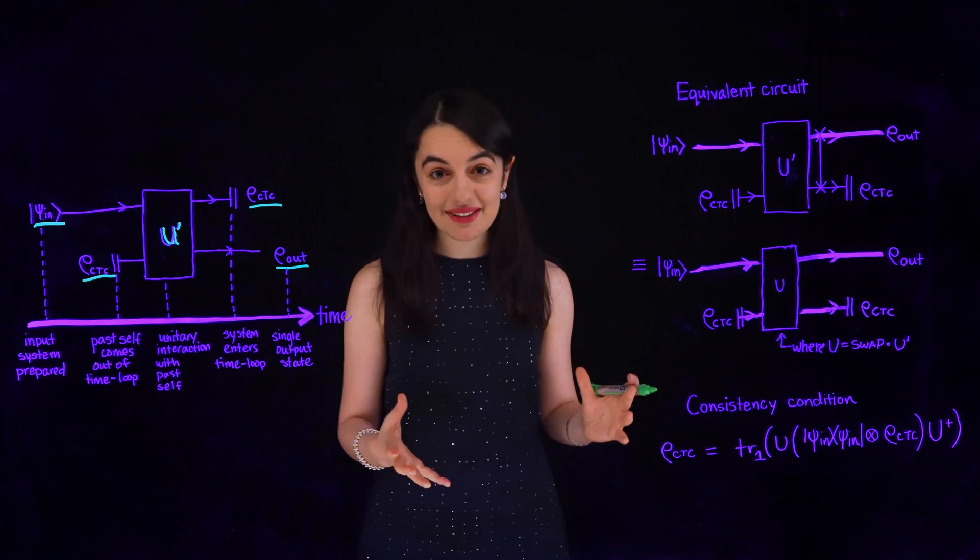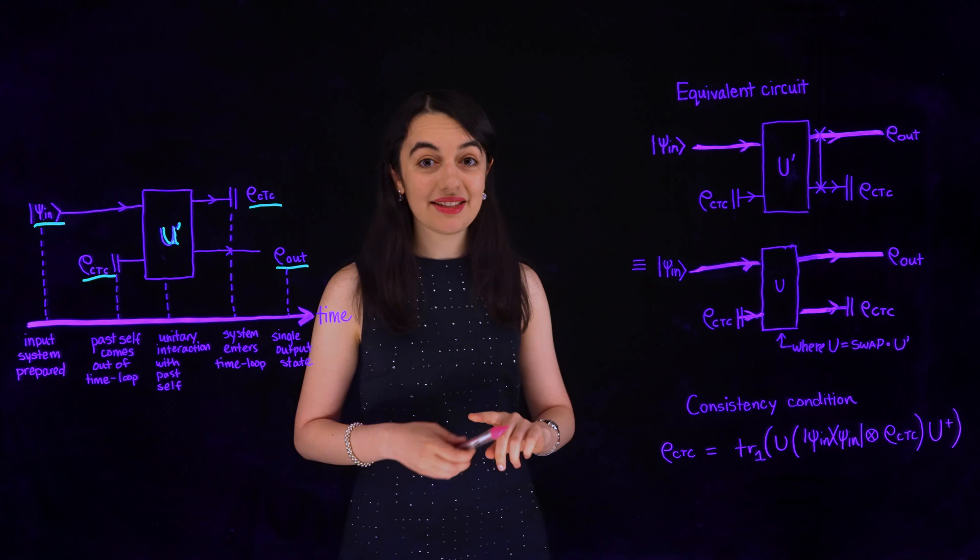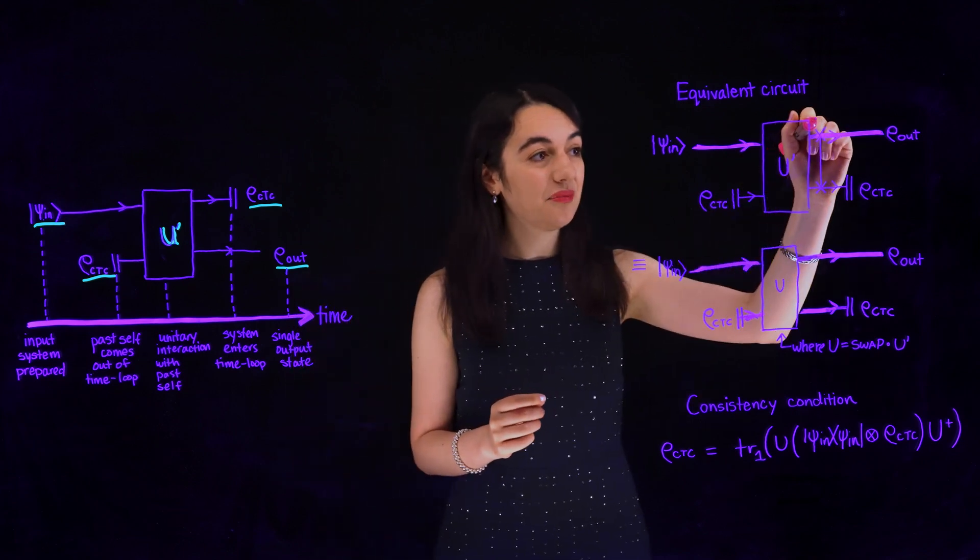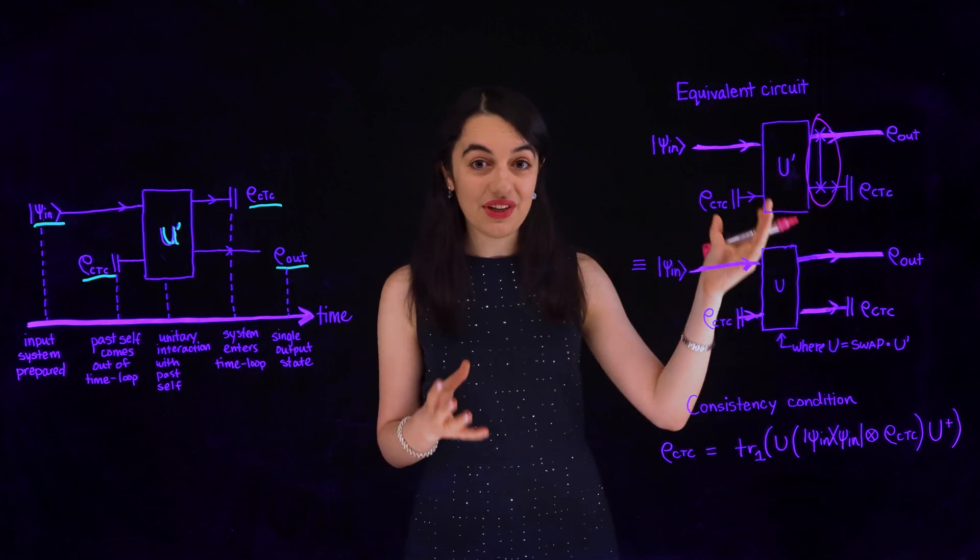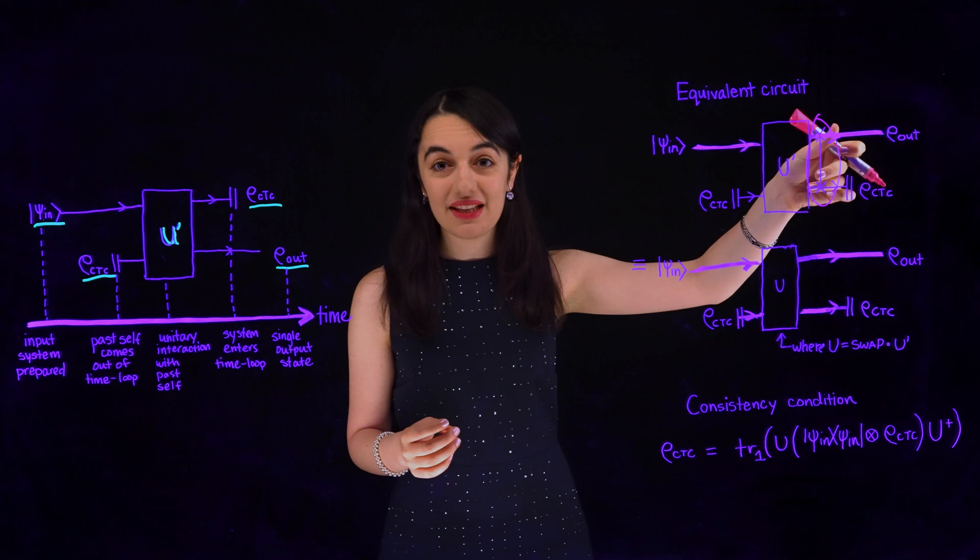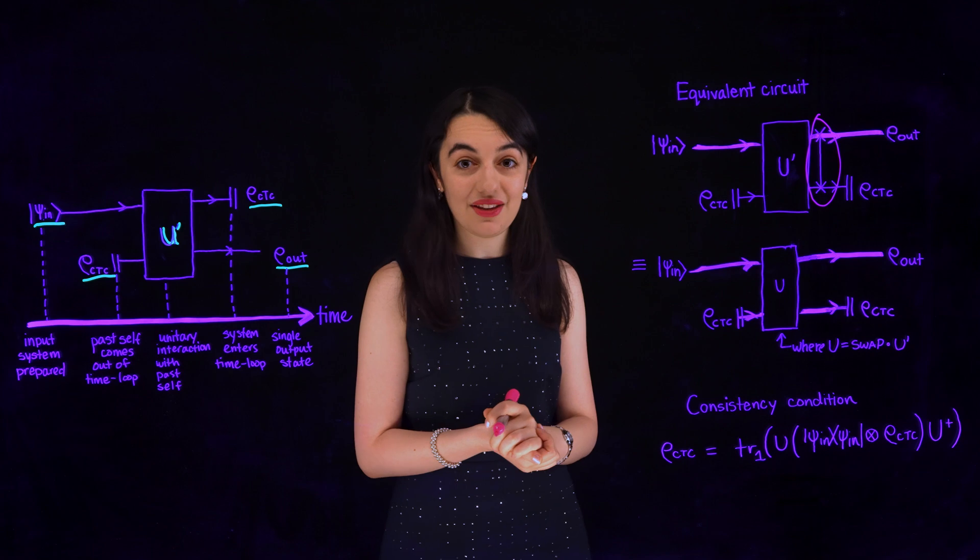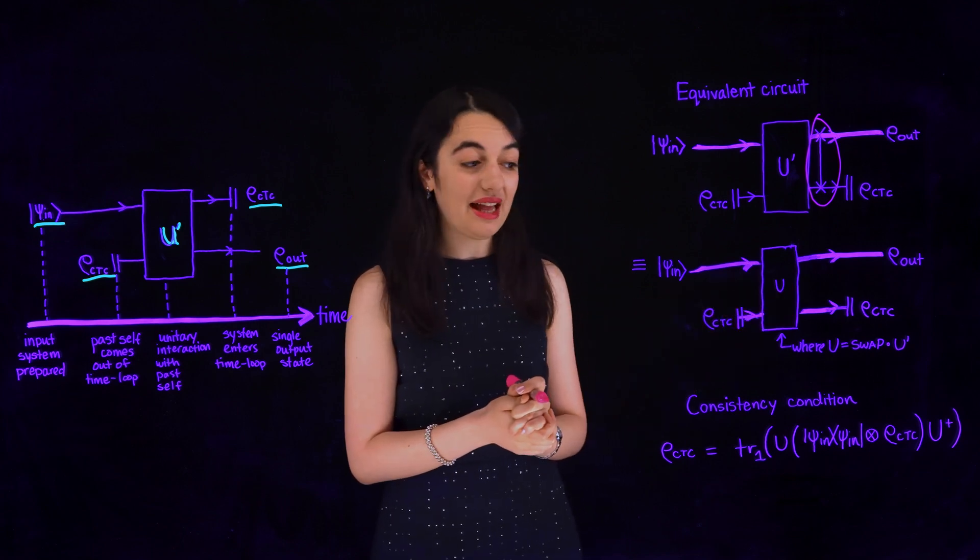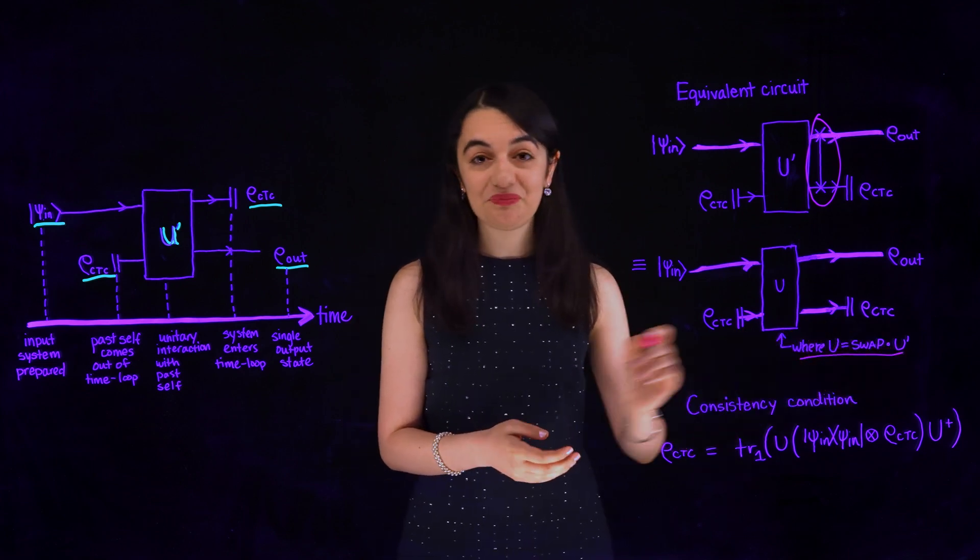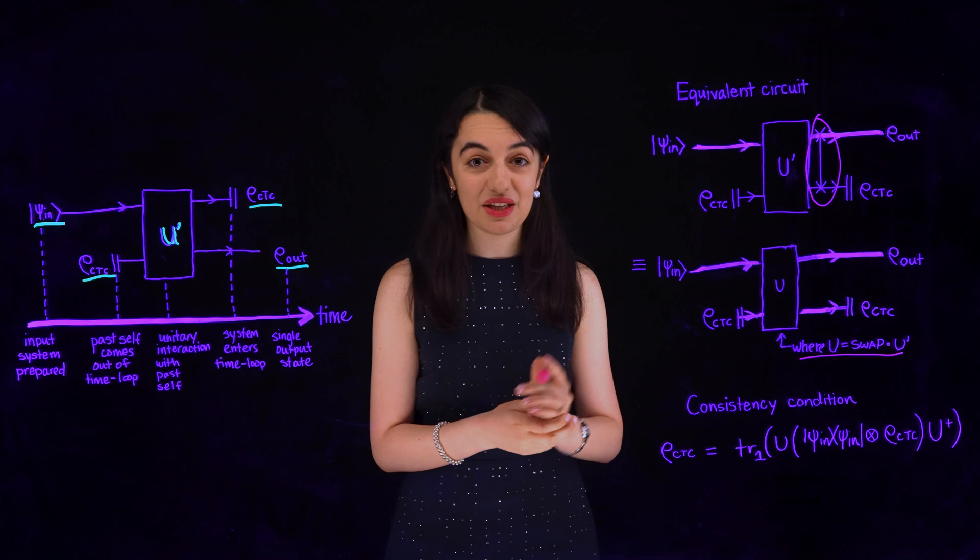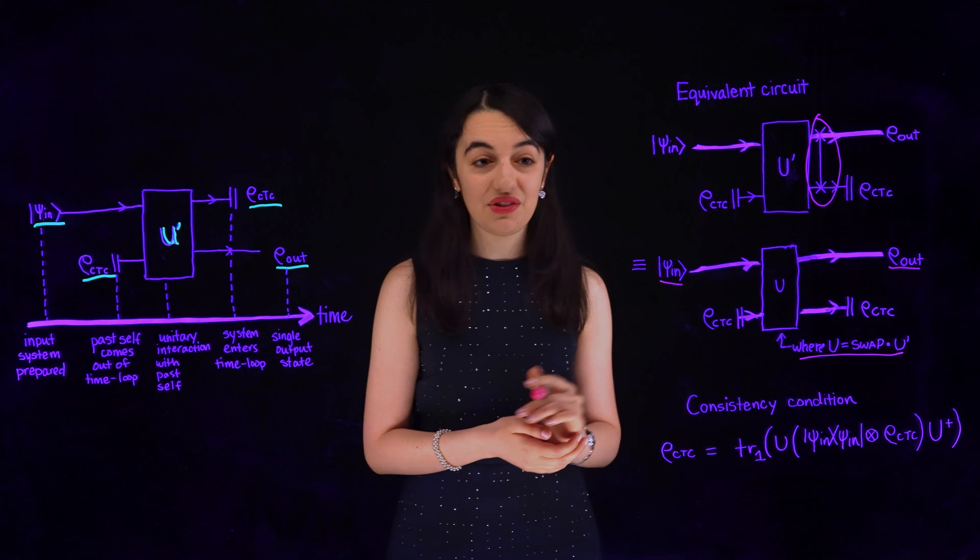It is helpful to rewrite this circuit in an equivalent form. Let's add a swap gate between my two selves before the end of the circuit. This is a valid unitary gate, which swaps the state of two systems. Then, I can write my circuit using a unitary U, which is the same as U', but with a swap gate at the end. Now, the first quantum system begins in ψ_in and comes out in ρ_out after the unitary U.